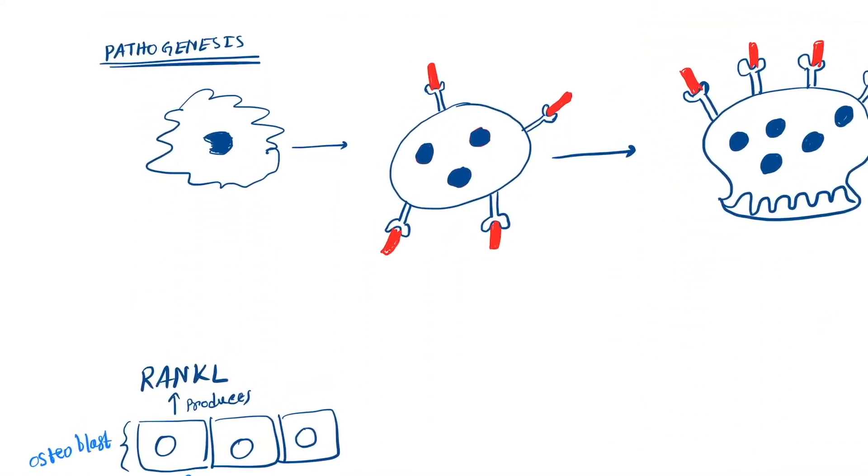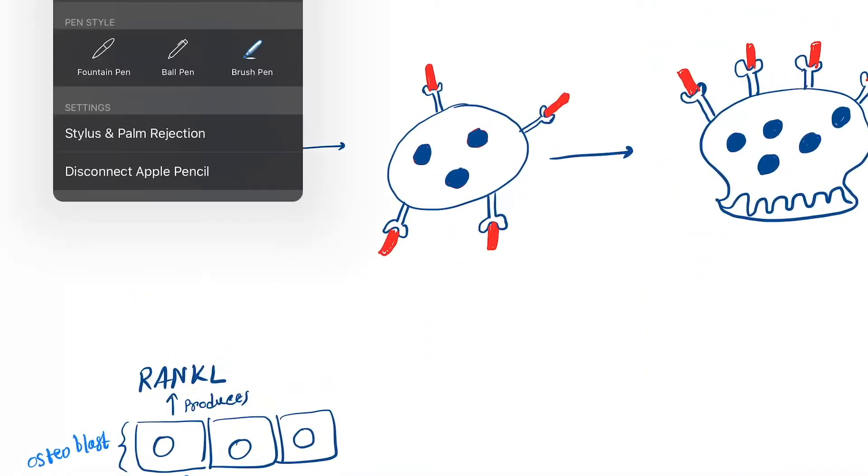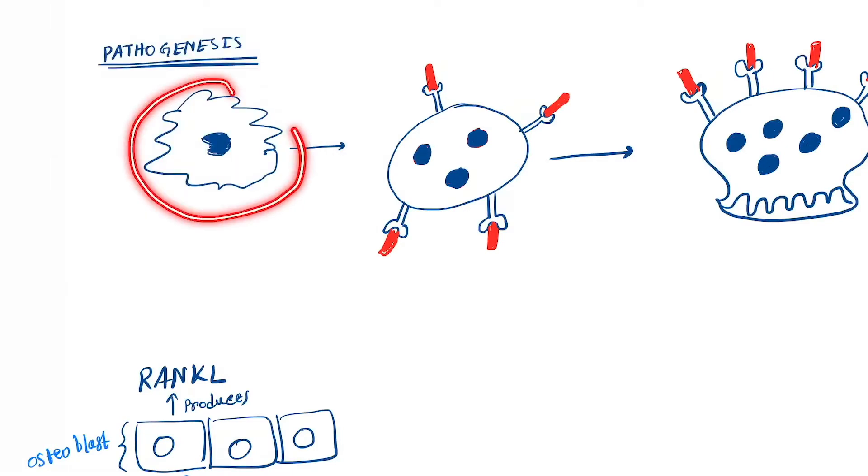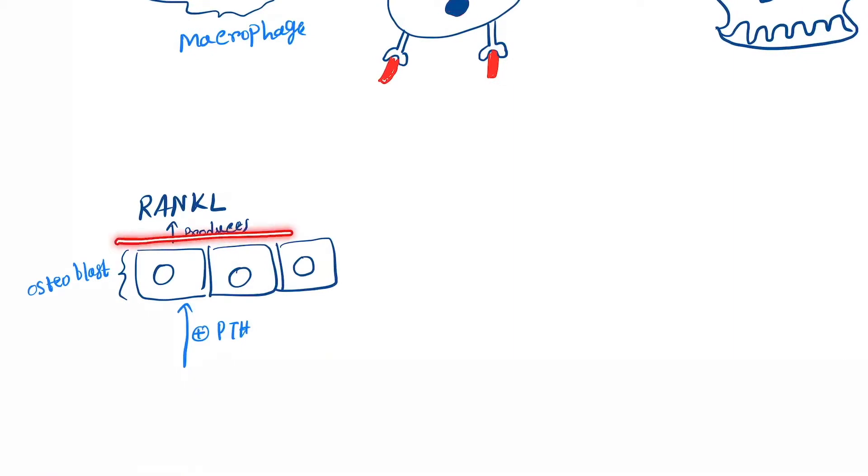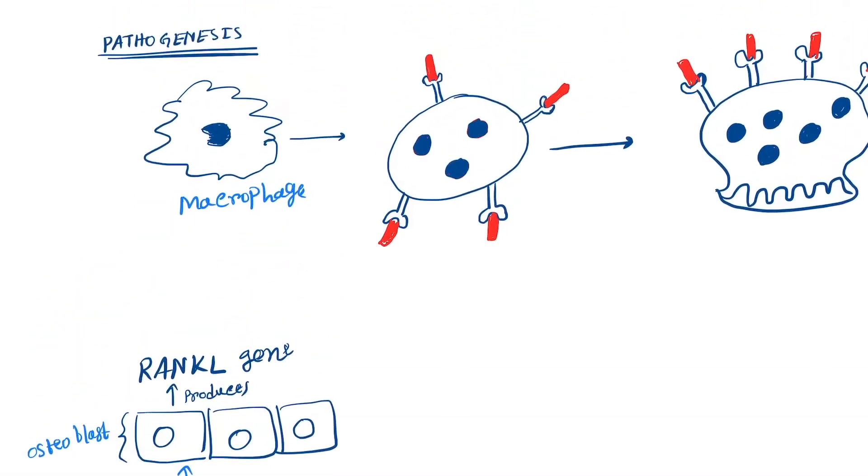Now come to the pathogenesis. This is the macrophage. The osteoblast cells, due to stimulation by PTH, form a gene named the RANKL gene. RANKL gene is a pro-apoptotic gene.